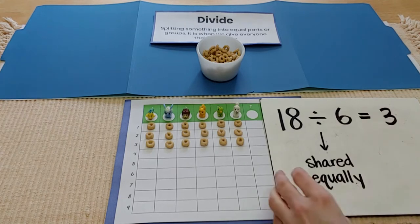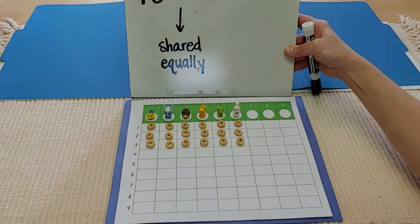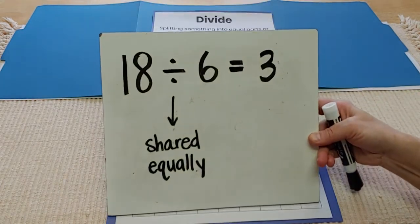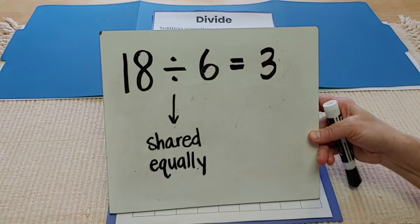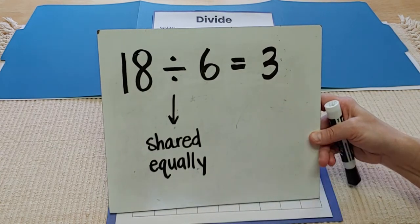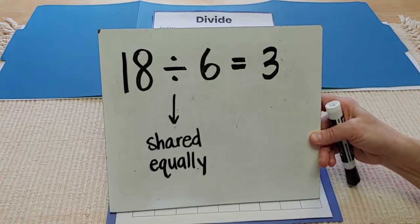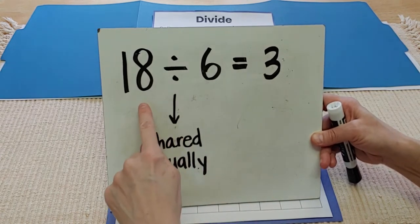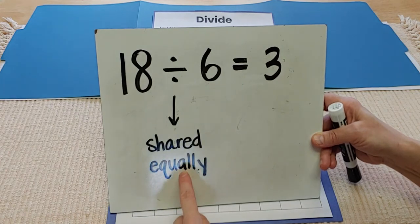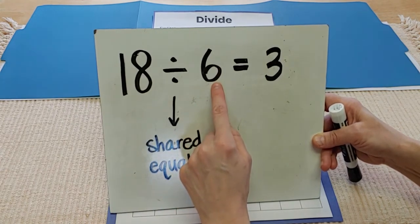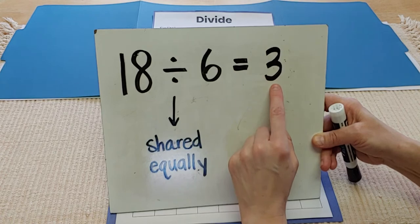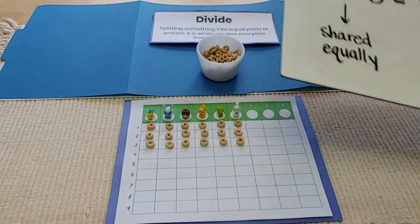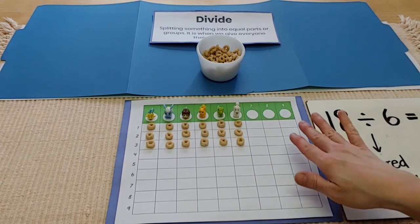If you want to read our division sentence, it would say 18 divided by six equals three. If I want to say it in a way that helps my brain to think of it as a story, I could say 18 Cheerios shared equally with six friends gives each friend three Cheerios. And that, my friends, is how you use this division board.